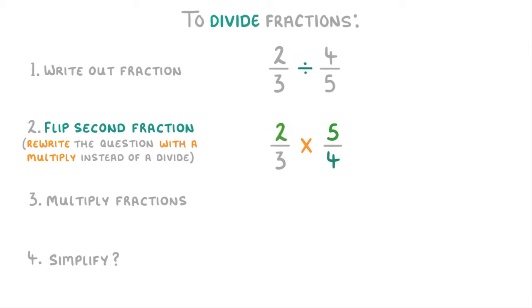2 times 5 is 10, and 3 times 4 is 12. So we have 10 over 12, which we can simplify by dividing top and bottom by 2 to get 5 over 6.